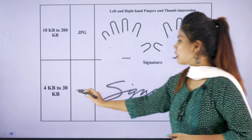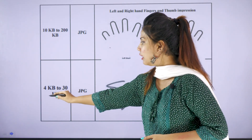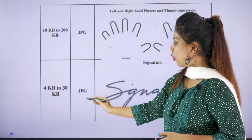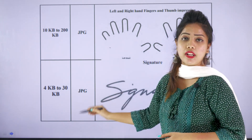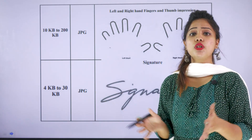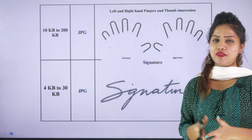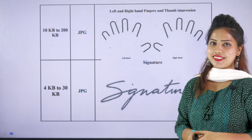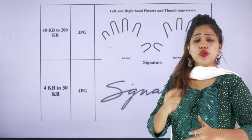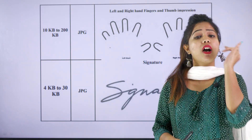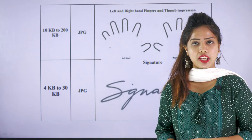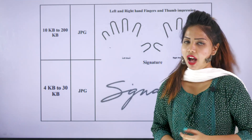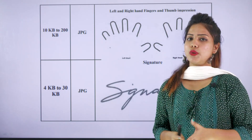Make sure your signature is similar to the one on your 10th mark sheet. The image size for the signature is 4 KB to 30 KB, and the format is JPG. Apart from these, you also need your community certificate, address proof, and your 10th mark sheet.